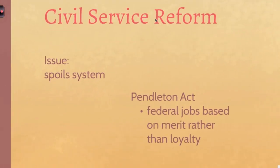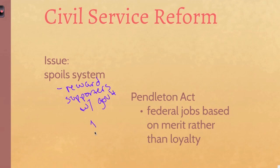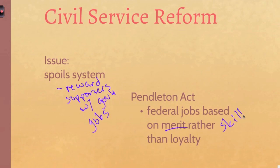Civil service reform during this time was actually something positive that came out of this era. One of the issues — starting with even Andrew Jackson and continuing through the Gilded Age — was the spoil system, where you reward your political supporters with government jobs. Instead of picking a Secretary of Defense because they have military experience, you pick them because they're your buddy and helped you get elected. To reform this, they passed the Pendleton Act, which made government jobs based on merit or skill rather than loyalty — leading in a positive direction away from the old spoil system.